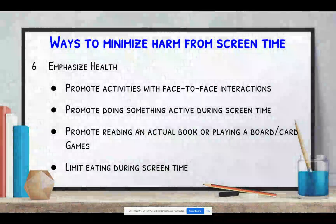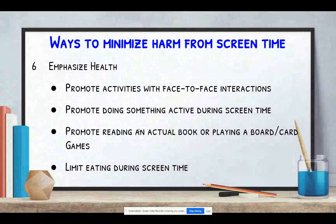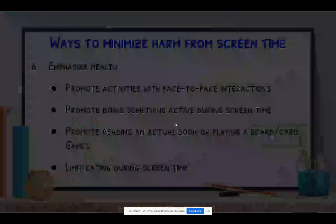Way number six is to emphasize health. Promote activities with face-to-face interactions — as we said in the last session, kids learn best face-to-face, whether in play, conversation, or learning. Promote doing something active during screen time, reading an actual book, or playing a board game or card game. Promote physical activities like sports, clubs, and outdoor play. And to combat obesity, as discussed in session two, we need to limit eating during screen time.